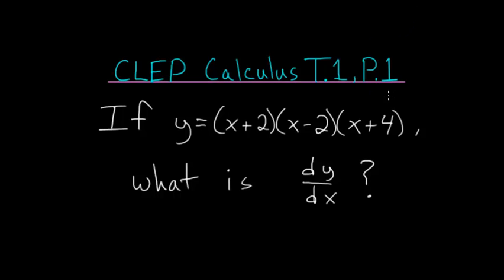This is the first problem on the first CLEP calculus test. If y is equal to x plus 2 times x minus 2 multiplied by x plus 4, then what is the derivative of y with respect to x?